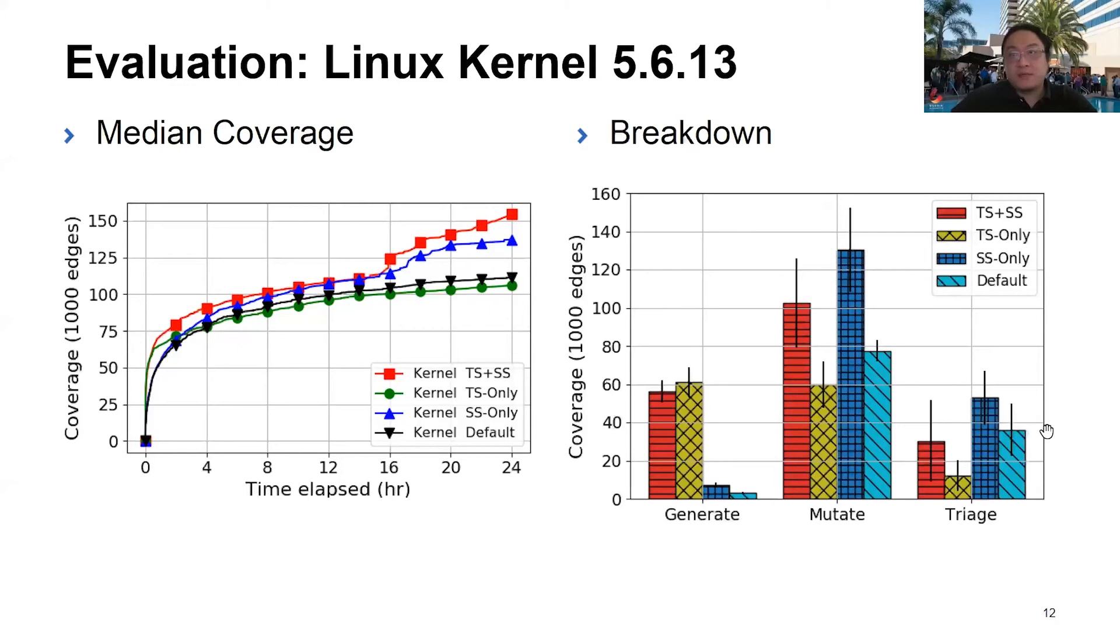Breaking down the coverage by task, we found that as we expected, the task selection makes generation contribute much more coverage. With seed selection, the mutation becomes much more effective.